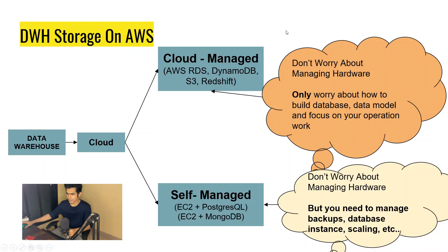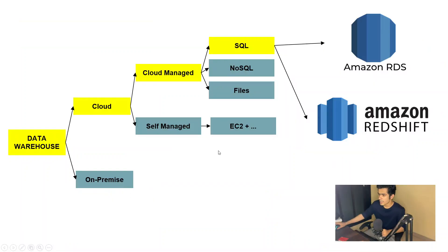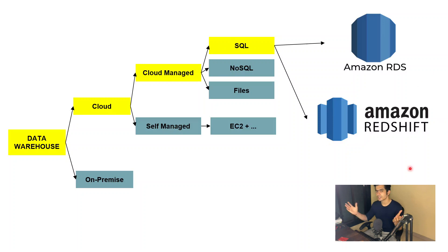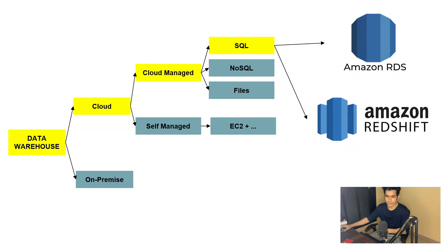So you have both options: cloud-managed and self-managed. It's completely based on requirements — there's no single answer for which is better. Cloud-managed is better if it matches your needs, and self-managed is also requirement-based. In the data warehouse architecture on AWS, under cloud-managed we have SQL (AWS RDS and AWS Redshift), NoSQL, and files stored in S3 or other storage services. Self-managed is basically EC2. That covers the differences between cloud and on-premise and the various service advantages.